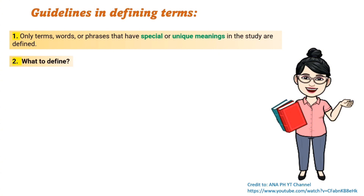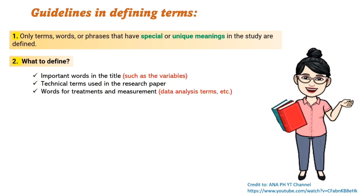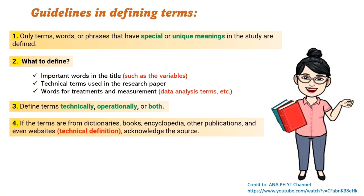Number two — what to define: important words in the title such as the variables, technical terms used in the research paper, and words for treatments and measurement such as data analysis terms and others. Number three: define terms technically, operationally, or both. Some researchers use technical definition only, others use operational definition only, while others use a combination of both. Number four: if the terms are from dictionaries, books, encyclopedias, other publications, or websites — that is, a technical definition — you have to acknowledge or properly cite the source.